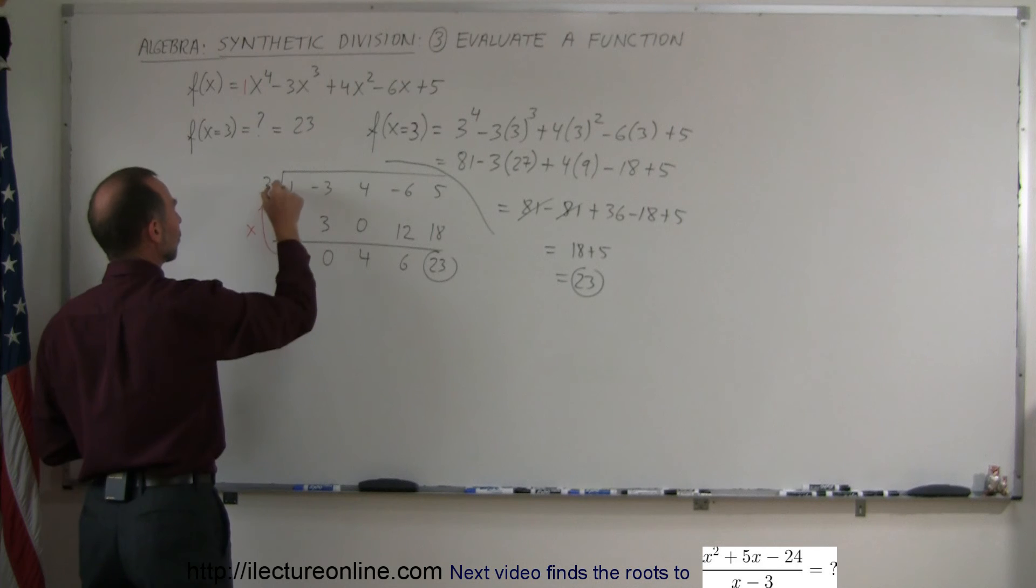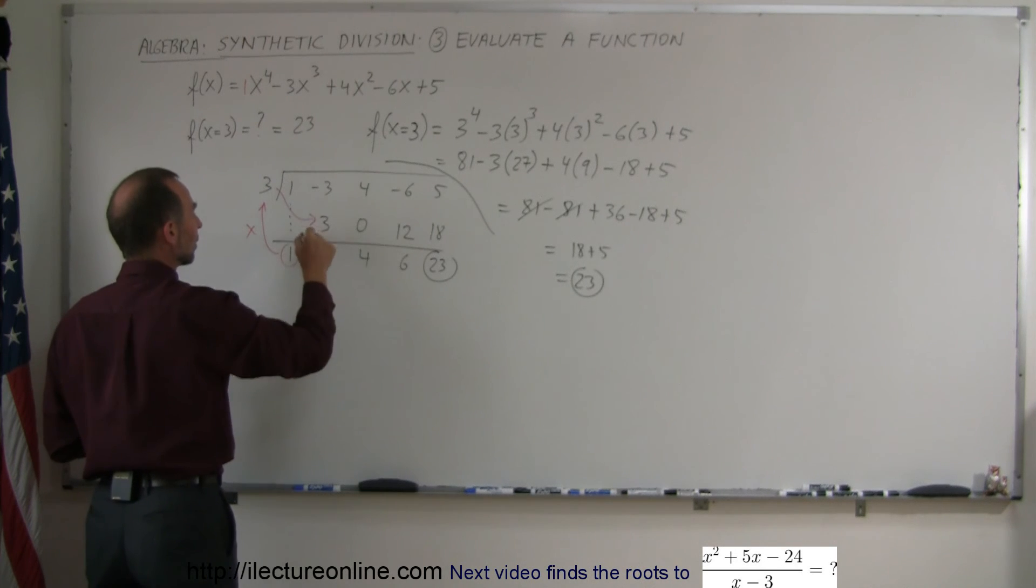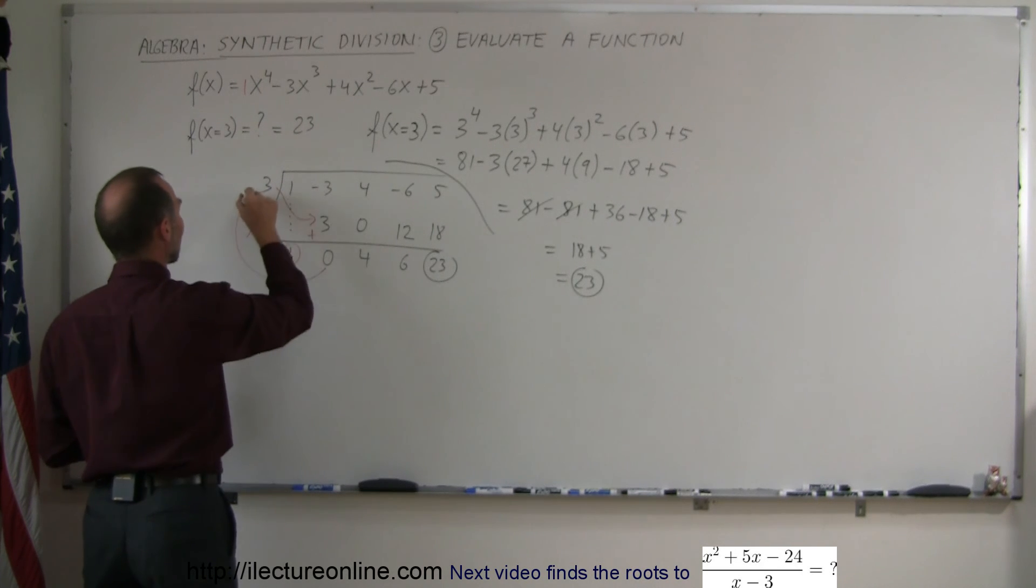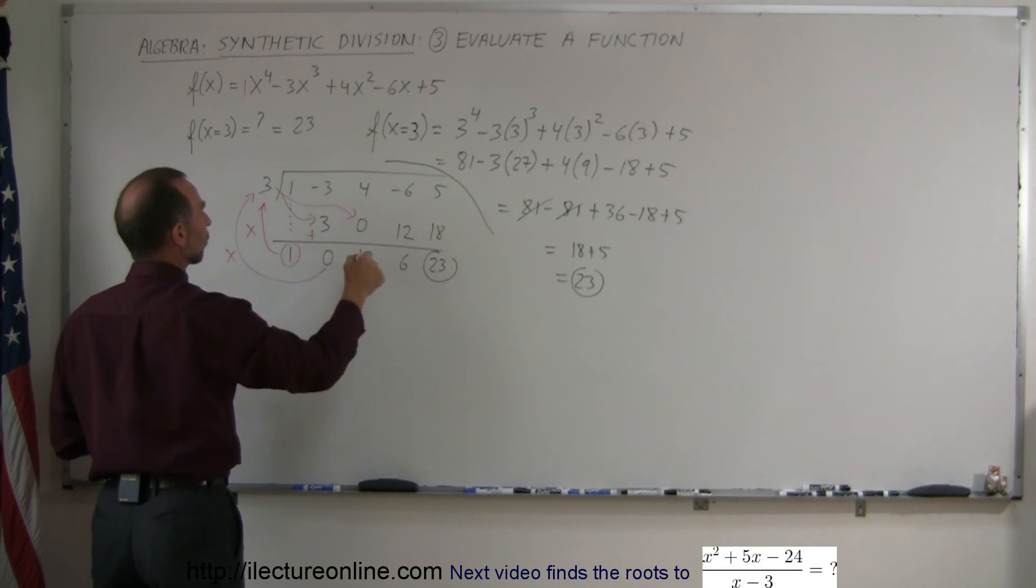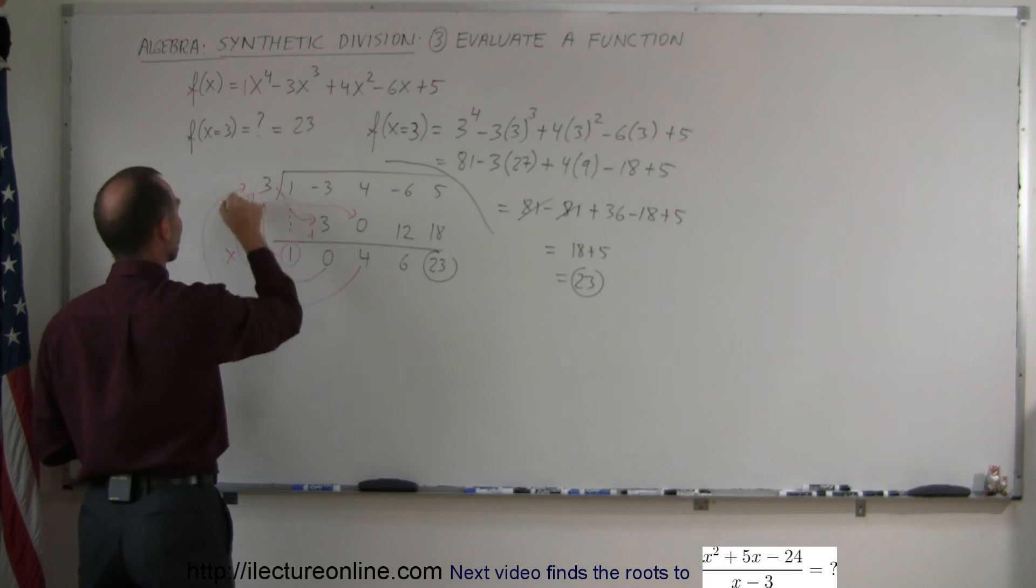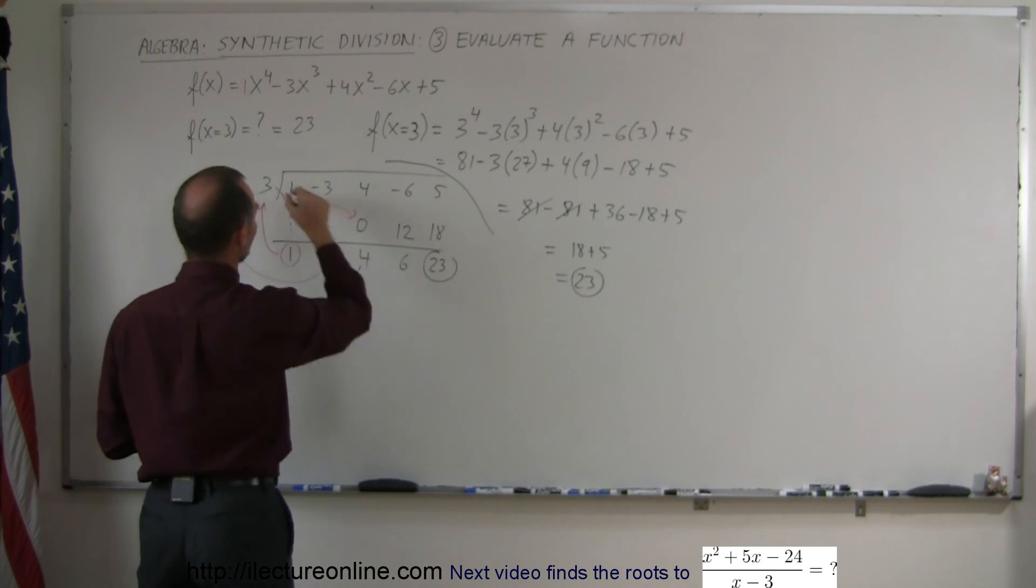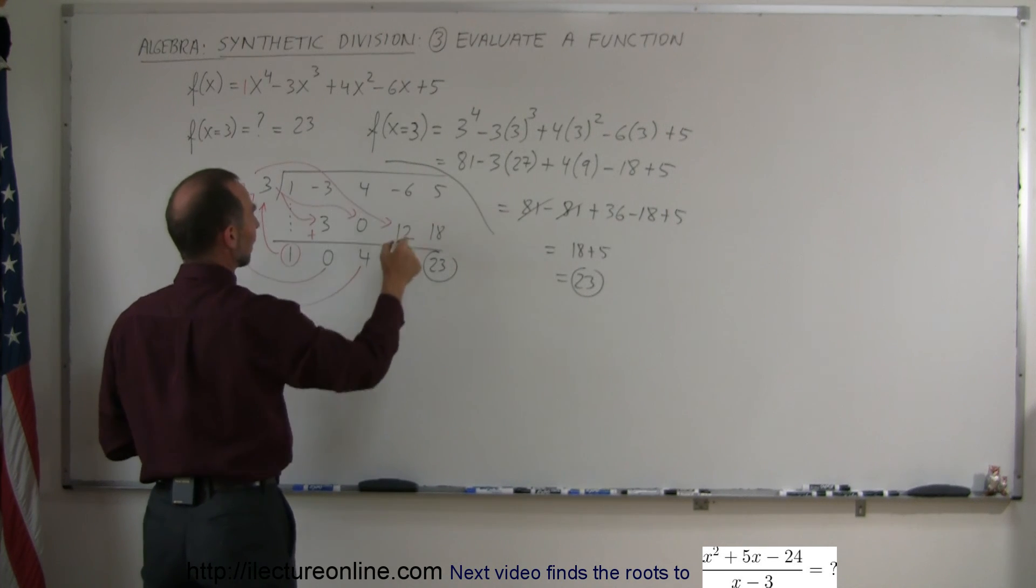1 times 3 gives you 3. Add them together, you get 0. 0 times 3 gives you 0. 0 plus 4 is 4. 4 times 3 gives you 12. Add them together, you get 6.